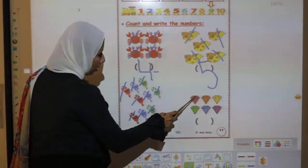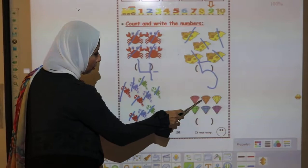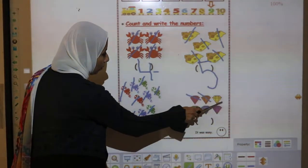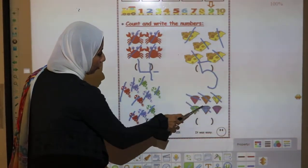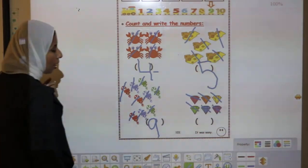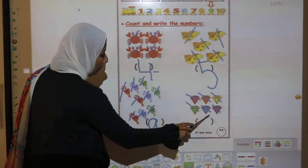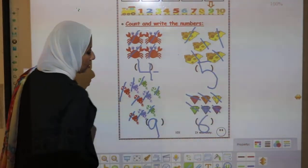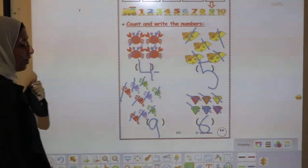Count again. 1, 2, 3, 4, 5, 6. How can I write number 6? Bending stick and semicircle.